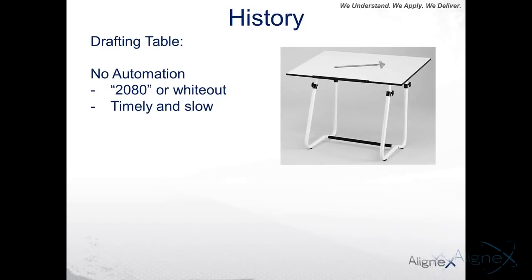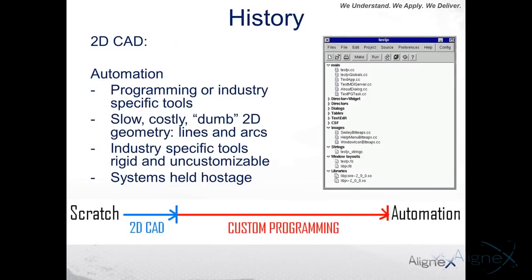A little history for those who've been in the industry a while — you may have started on the board. When we talked about automation back then, those who've been around may remember Mylar drawings and the Xerox 2080 process. If you wanted automation, you'd go to a reprographics room before lunch, order prints done a couple hours later, and if you were changing a conveyor size from 7 feet to 12 feet, you'd use white-out, change the dimension, and rerun it through the machine. That was your new print — not really automation at all.